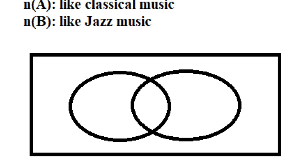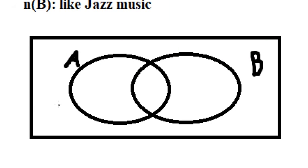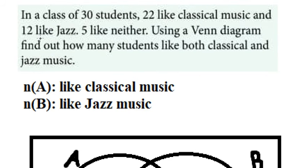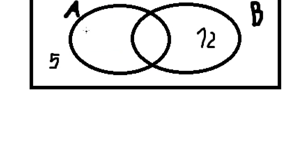So I will put A, this one is B. We know that we have 5 like neither, so number 5 we put in here. The next one, we have 12 like jazz, we put here, and 22 we put in here.